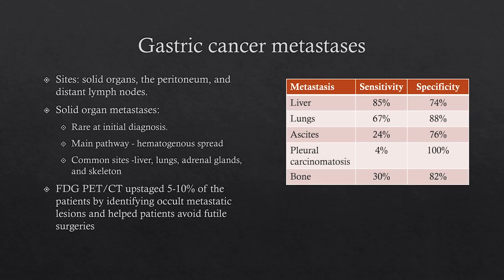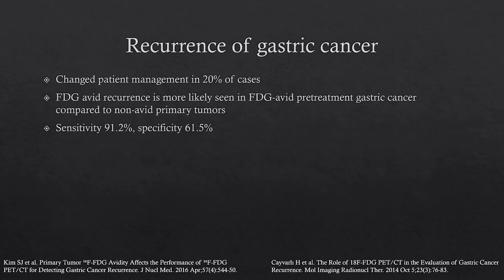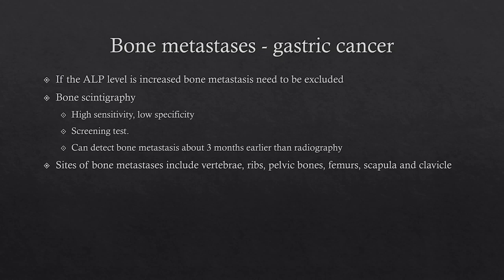Despite these numbers, FDG PET-CT has upstaged about 5% to 10% of patients by identifying occult metastatic lesions and helped avoid surgeries. For recurrence of gastric cancer, FDG PET has changed management in about 20% of patients. FDG-avid recurrence is more likely when the primary gastric tumor was FDG-avid itself. Sensitivity has been reported at 91% with specificity of about 61.5%. If you see elevated ALP levels, you need to exclude bone metastases. Bone scintigraphy is highly sensitive but has low specificity, making it good as a screening test, detecting metastases about three months before radiography. Common sites of bone metastases include the vertebrae, ribs, pelvic bones, femur, scapula, and clavicle.